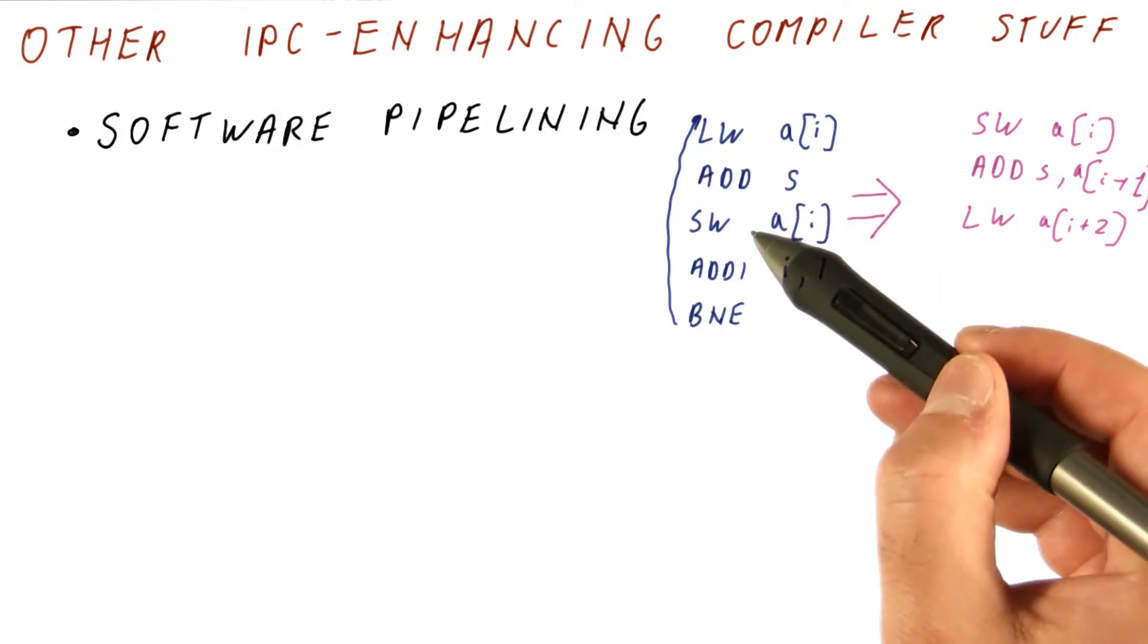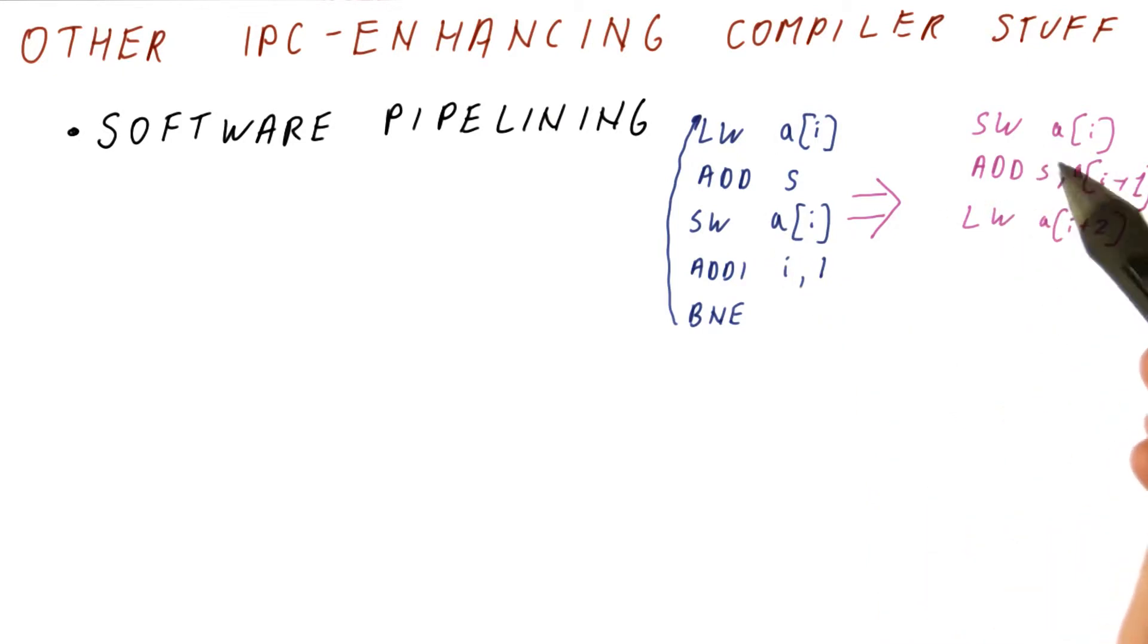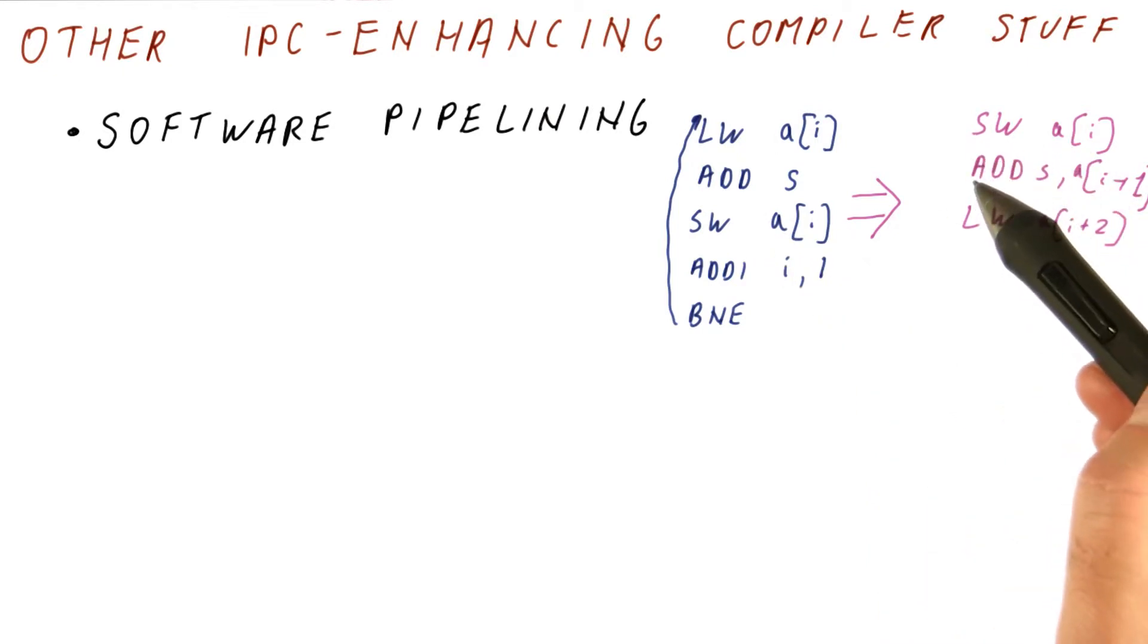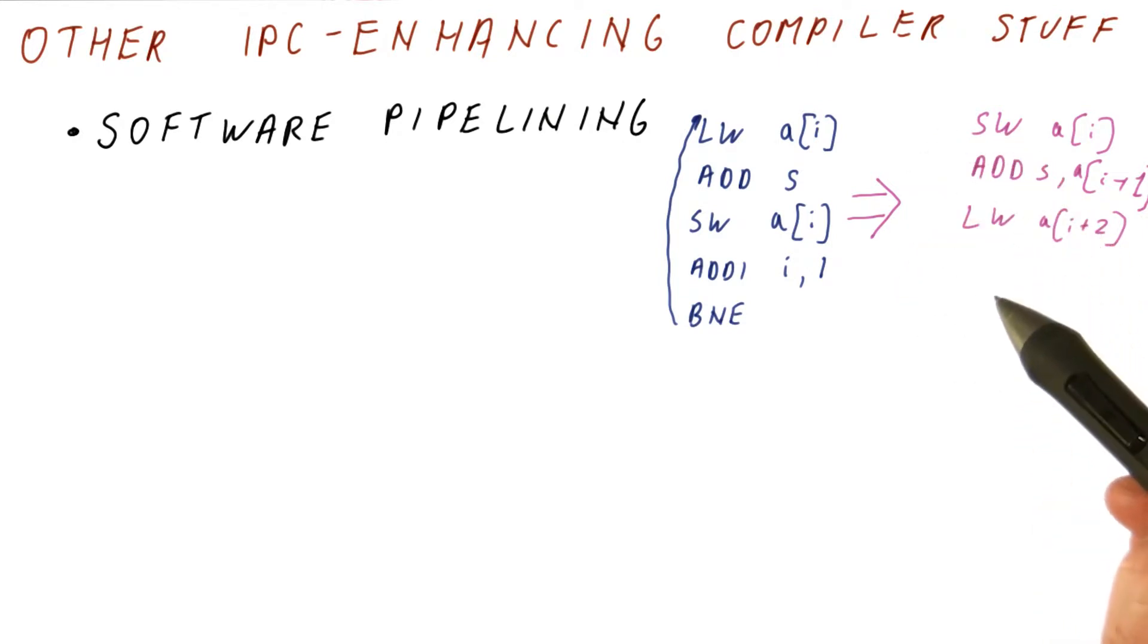Well, because here we have dependencies, whereas here we don't. This store here is storing a value to which we have been adding in the previous iteration of the loop, and this add is using the value that we have loaded in the previous iteration of the loop and so on. So it kind of forms a pipeline out of the loop, and then it allows us to do parts of different iterations concurrently with each other.